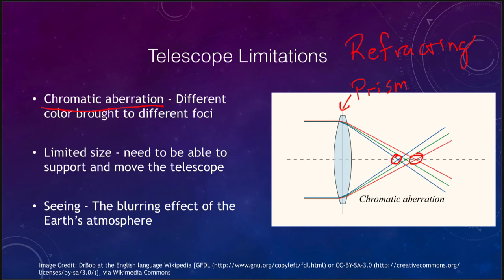There are some methods to work around chromatic aberration, such as combining multiple lenses to minimize — though not eliminate — the effect. There is also a limited size to refracting telescopes. It's easier to build much bigger reflecting telescopes because in a refracting telescope you can only support the lens around the edges, not from behind since that would block the light. On a mirror, you can support it from behind, which is why we're able to build much larger reflecting telescopes.